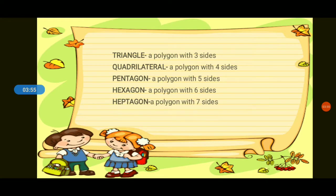Next, we have heptagon. Heptagon is a polygon with seven sides. What is a polygon with seven sides? It is a heptagon. A heptagon is a polygon with seven sides.